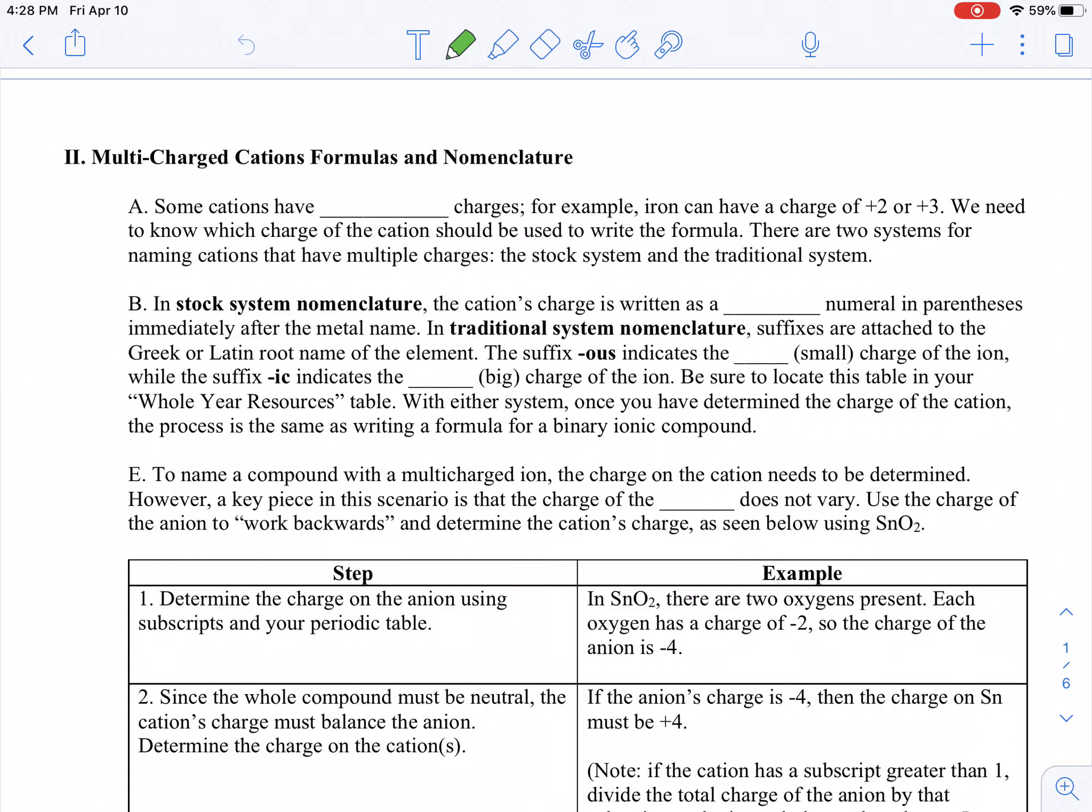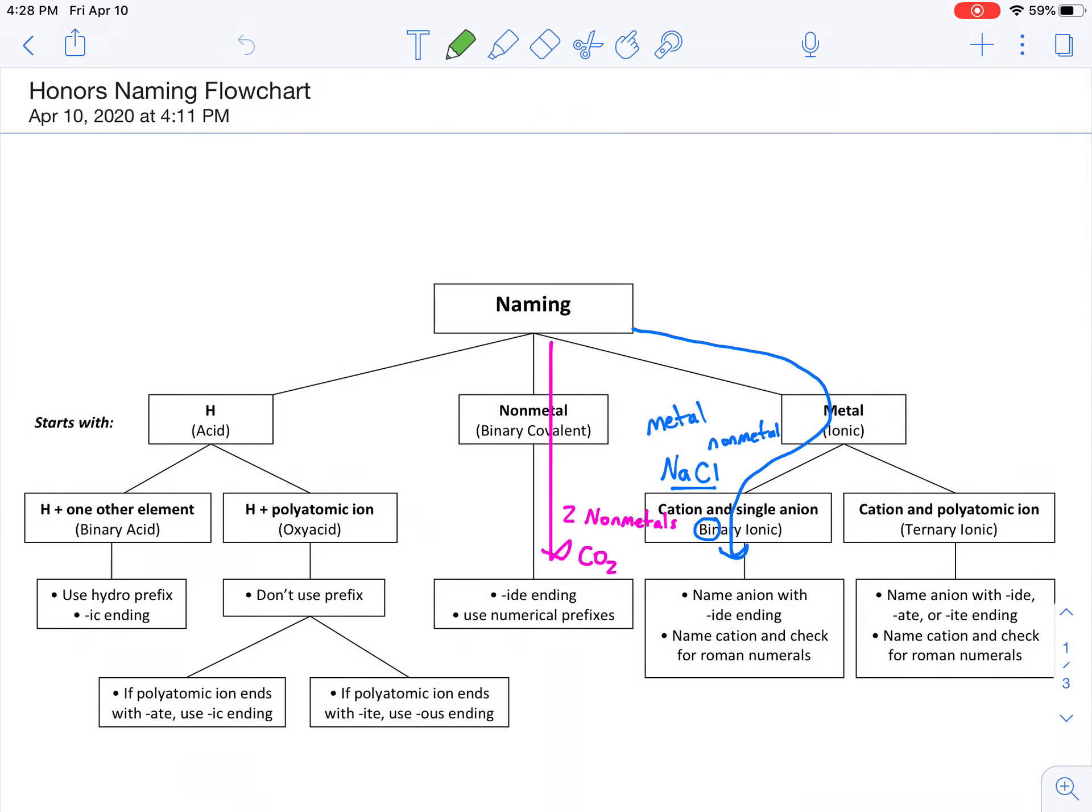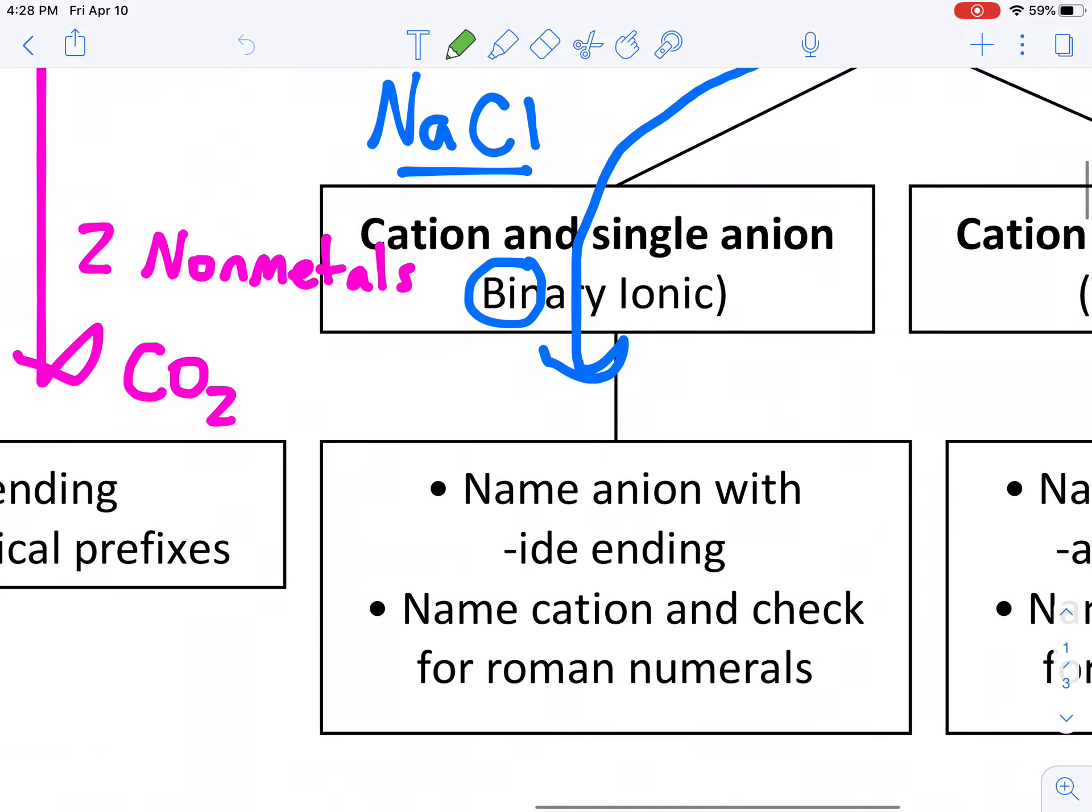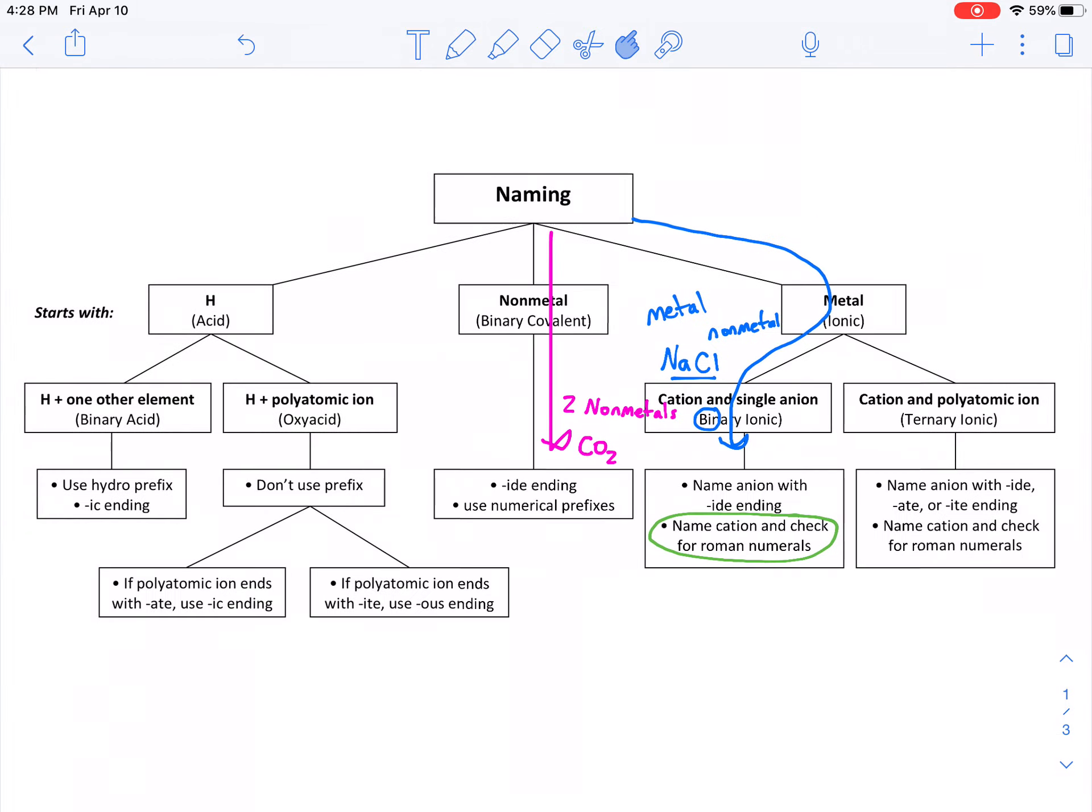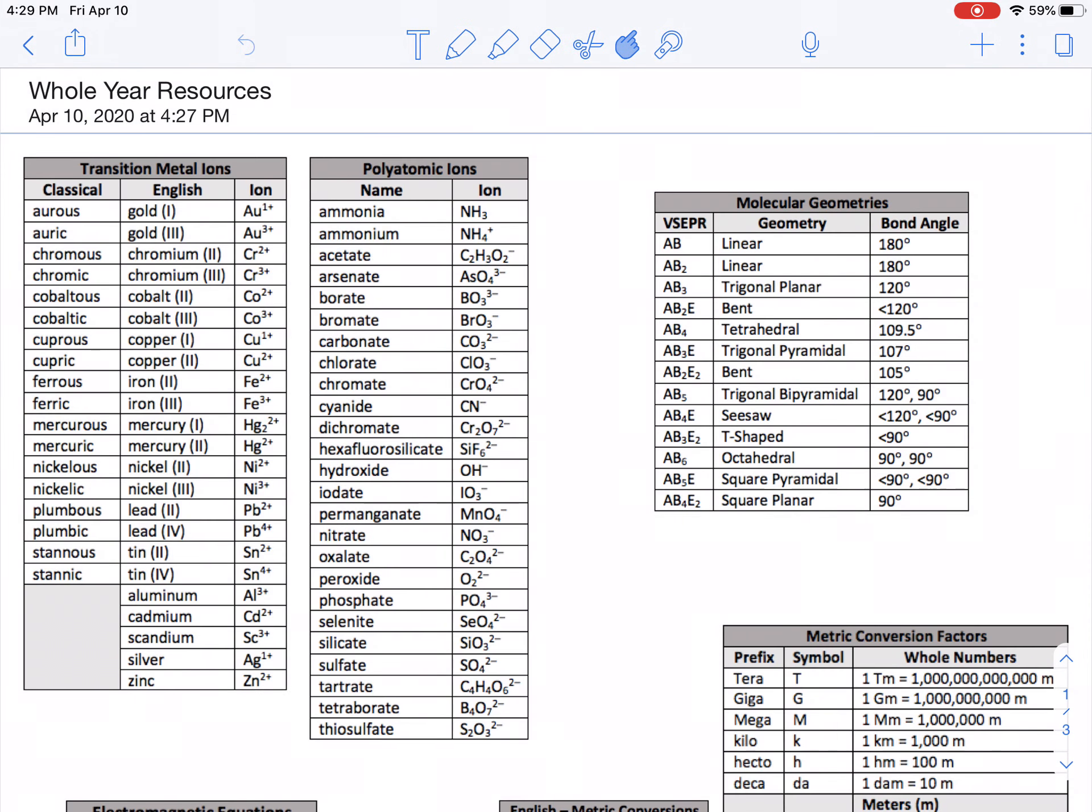Hey everybody, we're going to do some more ionic compound naming today, but today we're going to talk about cations that are going to have more than one charge, also known as multi-charged cations. So for some context, on our flowchart, we've already done that blue column, but we're actually going to stay in the same column. We are just doing this bottom bullet point. We need to check whether our metal needs a Roman numeral or not, and you'll see what that means in a second. It's going to be really useful for you to have a periodic table out. Also, if you have your whole year resources document out that looks like this, that's going to be valuable as well.